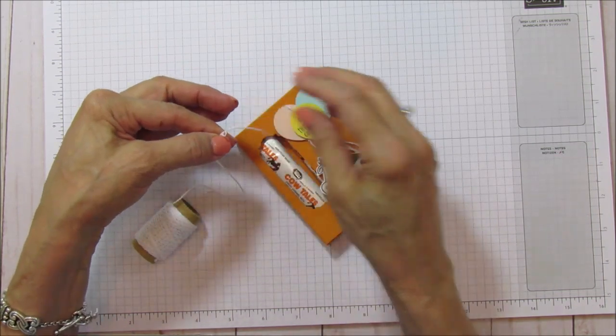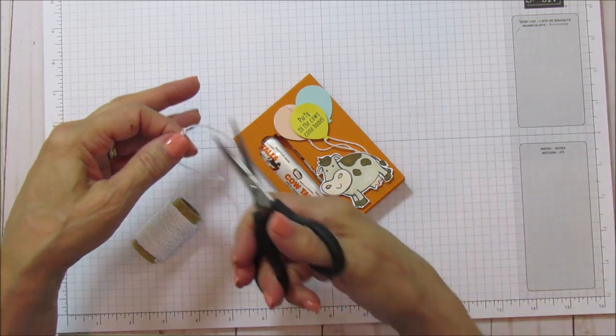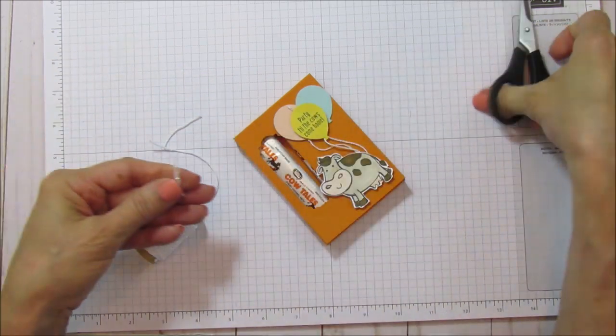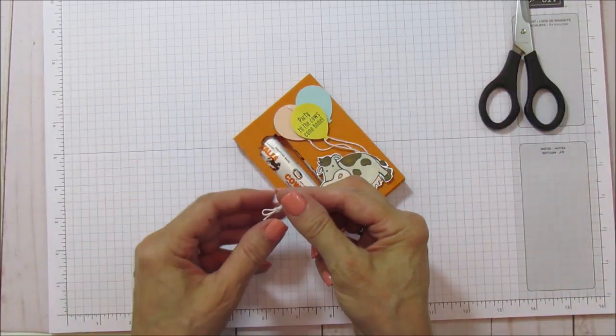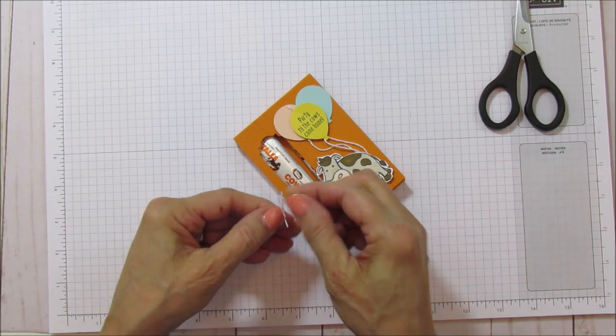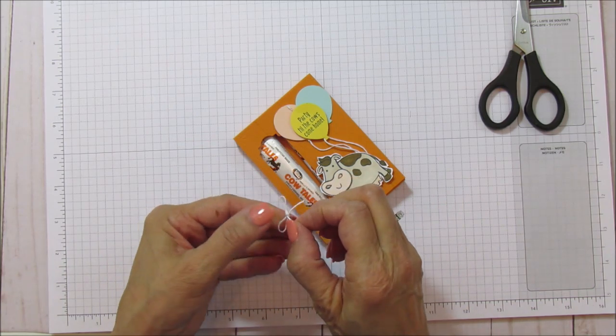And then we're going to just make an itty bitty tiny bow for on his tail like he's holding it. And again I'm going to use a little tiny glue dot.